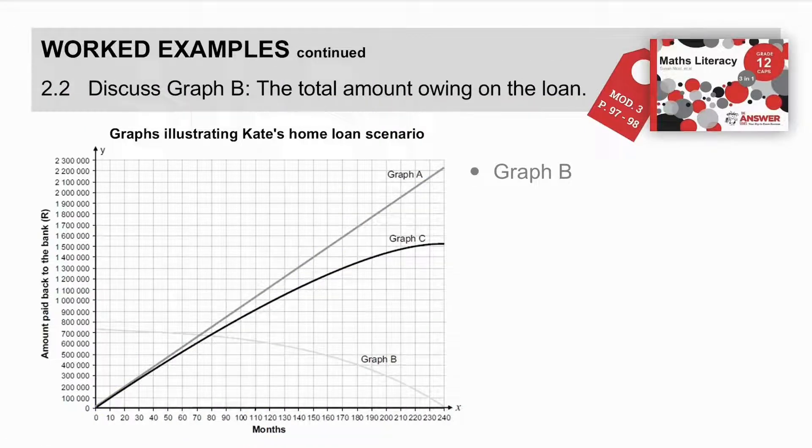Question 2.2. Discuss graph B, the total amount owing on the loan. Let's have a look at graph B. So, it starts at the value of the home loan. And, it decreases throughout the length of the loan.